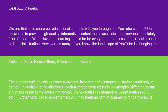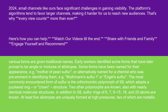Furthermore, because elemental sulfur has been an item of commerce for centuries, its various forms are given traditional names. Early workers identified some forms that have later proved to be single or mixtures of allotropes. Some forms have been named for their appearance, e.g. mother-of-pearl sulfur, or alternatively named for a chemist who was preeminent in identifying them, e.g. Muthmann sulfur I or Engel sulfur.